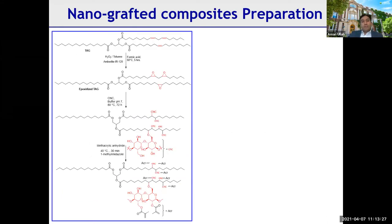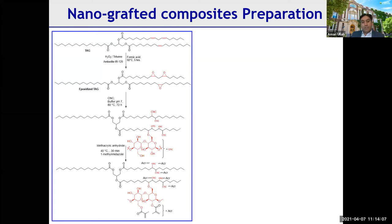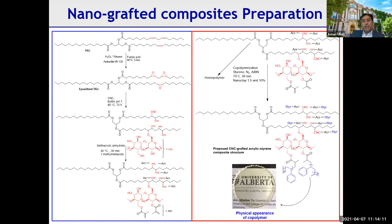We started with the triglyceride (TAG) itself and functionalized it by oxidizing it — without any solvent, whereas organic solvents are generally used. The epoxidized TAGs were then functionalized with cellulose nanocrystals (CNCs), which are commonly used as reinforcing agents but are difficult to disperse. We linked them on the surface, then functionalized the remaining surface with cross-linkable polymerizable functional groups and polymerized it into films.